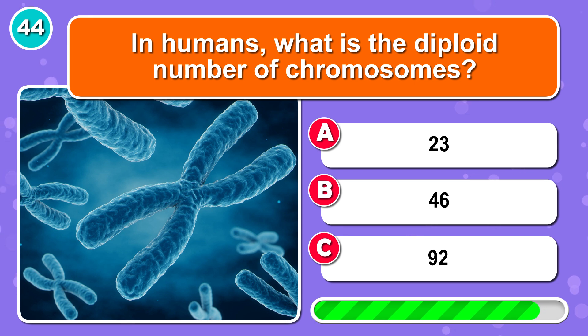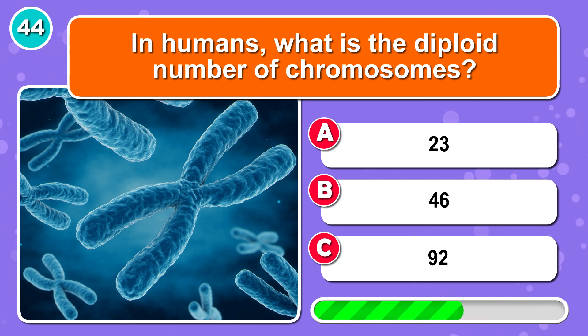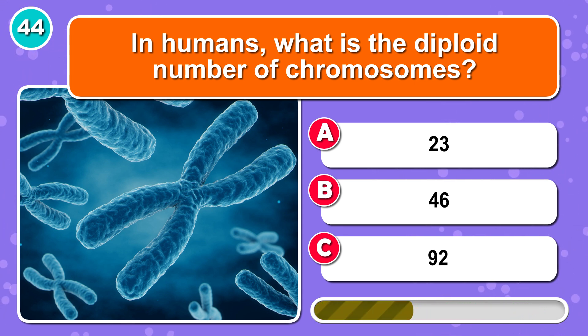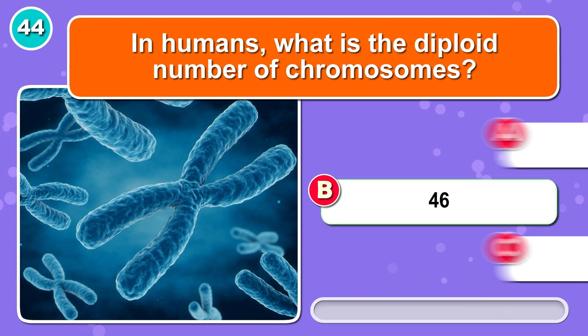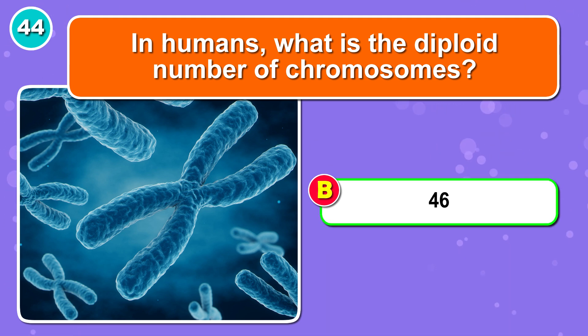In humans, what is the diploid number of chromosomes? The correct answer is B: 46.